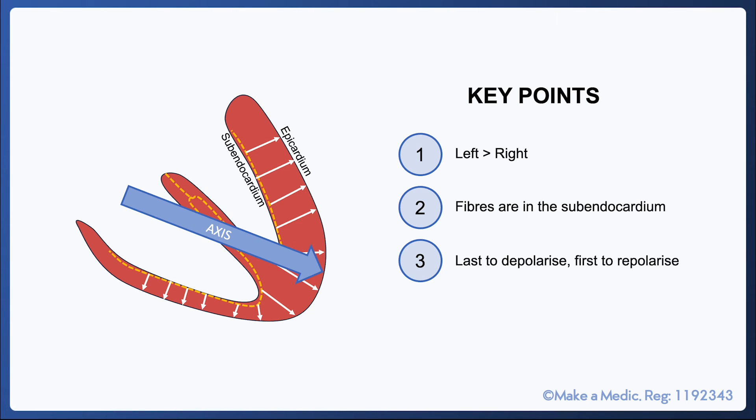There are a couple more key points that are important when interpreting and understanding ECGs. First, the left side of the heart in the average healthy adult is bigger and thicker than the right. This means there's more muscle to depolarize and hence it causes a bigger deflection than the right.